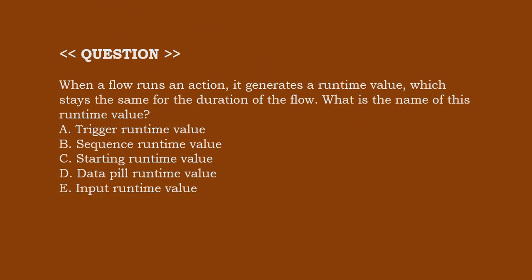Next one, when a flow runs in action, it generates a runtime value which stays the time for duration of the flow. What is the name of this runtime value? Option A, Trigger Runtime Value. Option B, Sequence Runtime Value. Option C, Starting Runtime Value. Option D, Data Pin Runtime Value. Option E, Input Runtime Value.